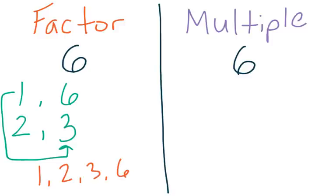Notice all of our factors are smaller than our number or are our number — there's 6, everything else is smaller. That's an important thing to remember about our factors: they're always going to be smaller than our number or they're going to be our number.